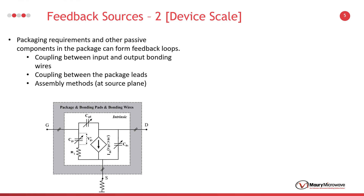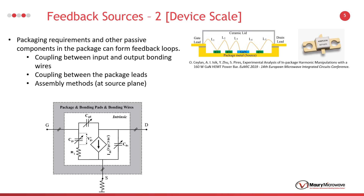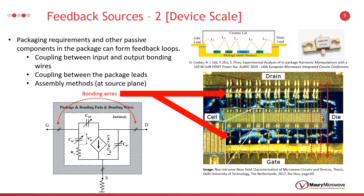One level up from the transistor is packaged devices. Especially large RF transistors are used within a package. Therefore, some bonding wires are needed to make a connection between the transistor's pads and package leads. Since the transistor's width is small, there might be some coupling between the bonding wires at the gate and drain. This is one of the obvious feedback sources in a packaged device. Another one is the resistance between the source and ground plane. The FET transistor is attached to the bottom of the package with some solder or conductive glue. However, these chemicals cannot provide perfect conductance and some resistance occurs between the transistor's source plane and package surface. In addition, if the package is very small, there might be some coupling between the package leads.